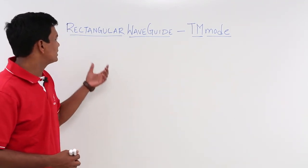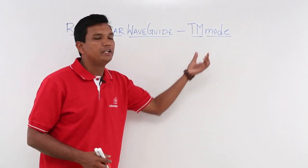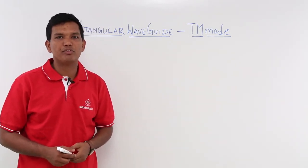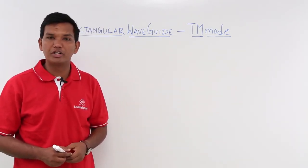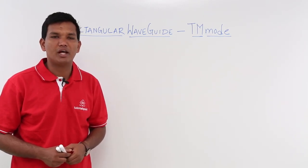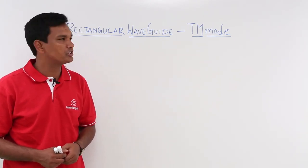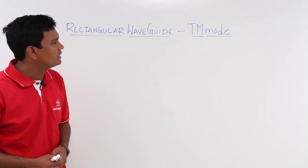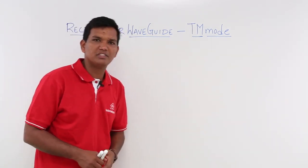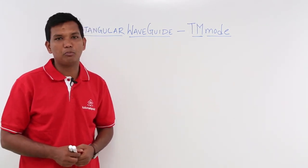In this video, we will be discussing about rectangular waveguide TM mode. As in the previous videos, we have already understood what is called modal propagation. If you change the values of M, you will have discrete patterns. That is what is called modal propagation. Now let us try to understand what we mean by a TM mode, which stands for transverse magnetic mode.